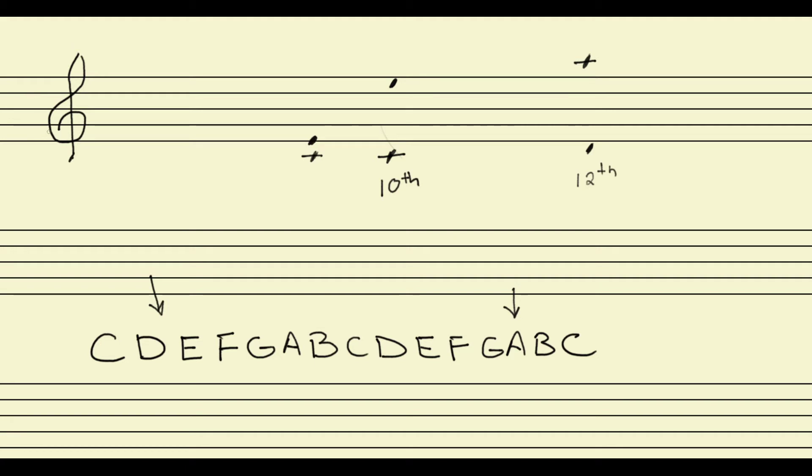So usually what we do is we think about a compound interval as being an octave plus another interval. So for instance, a tenth we think about as being an octave, C to C, plus a third, C to E. So an octave plus a third. And that makes sense, because we start on the C, we go up an octave, then we go up to that E, which is just a third. So we think about that tenth as really being just an overextended version of a third.